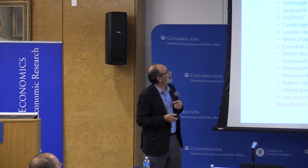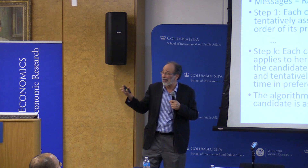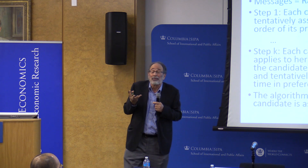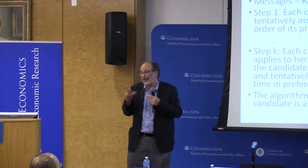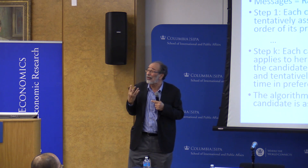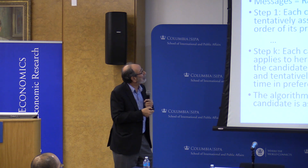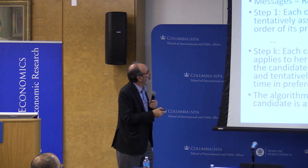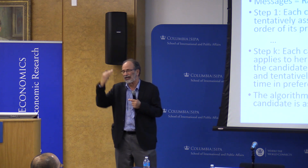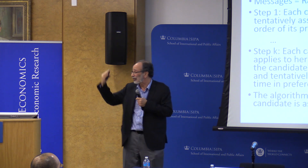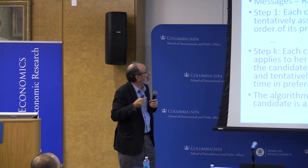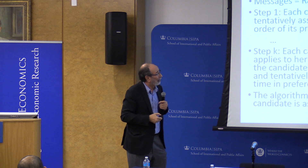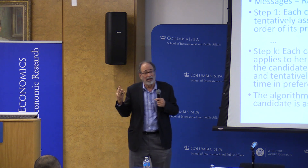Gale and Shapley's 1962 paper answered the question: must stable matchings exist? It's one thing to define a stable matching; another to show they always exist and suggest a mechanism to achieve them. This comes close to the idea of mechanism design — what are the messages going to be? The messages are rank order lists: candidates say here's my first choice, second choice, third choice, and residency programs do the same.